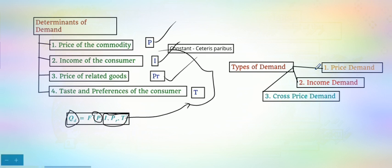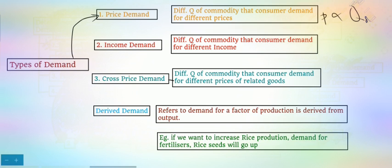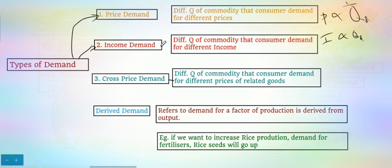Let's see in detail about the types of demand. The first is price demand, which explains the different quantities of a commodity that a consumer demands at different prices — simply the inverse relationship between price and quantity demanded. The second is income demand, which refers to the different quantities of a commodity a consumer demands at different income levels. When income is 5,000 his demand may be 100 kg; when income is higher, the quantity demanded will be higher. So there is a direct relationship between income and quantity demanded.